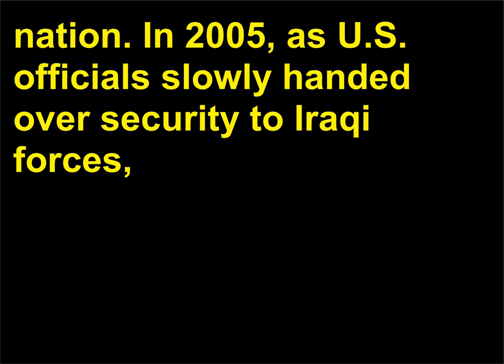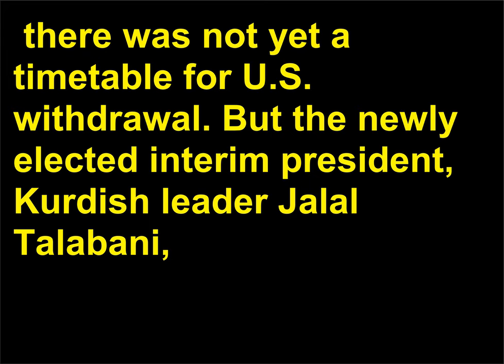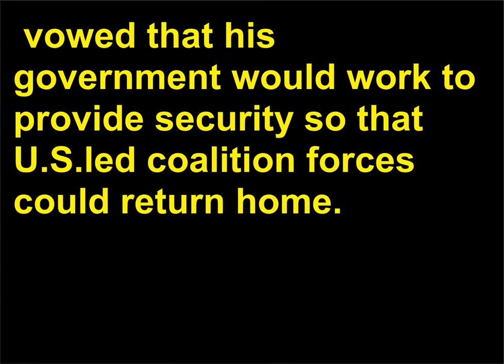In 2005, as U.S. officials slowly handed over security to Iraqi forces, there was not yet a timetable for U.S. withdrawal. But the newly elected interim president, Kurdish leader Jalal Talabani, vowed that his government would work to provide security so that U.S.-led coalition forces could return home.